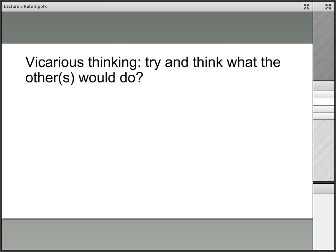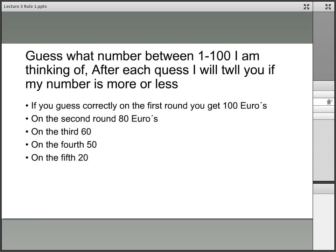Here is a small example of this. Try playing this game. I am thinking of a number between 1 and 100. You need to guess what number I am thinking of. After each guess, excuse me for the spelling mistakes, I will tell you if my number is more or less than the one you are guessing. If you guess correctly on the first round you get 100 euros, on the second round 80 euros, on the third 60, on the fourth 50, on the fifth 20 euros.